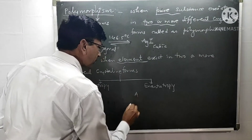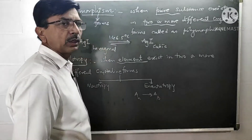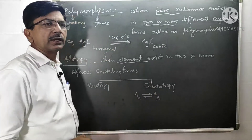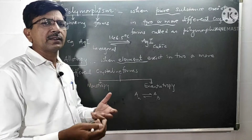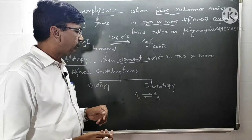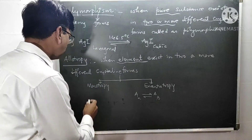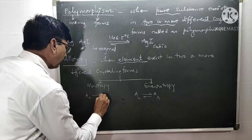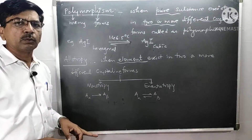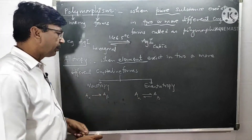Consider a general example: suppose substance A has two forms — alpha and beta. If we heat it to a particular temperature, the alpha form gets converted to the beta form, and the beta form can get converted back to alpha. This structural rearrangement and interconversion of allotropes is called enantiotropy. In contrast, in monotropy, the alpha form converts to beta, but beta never converts back to alpha — the conversion is irreversible.